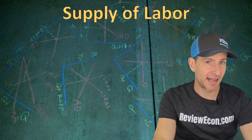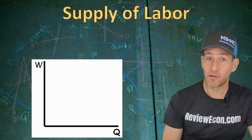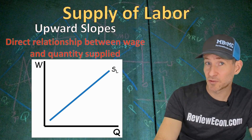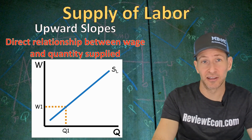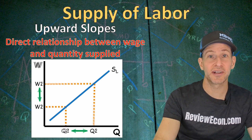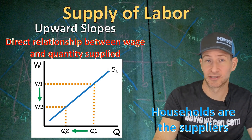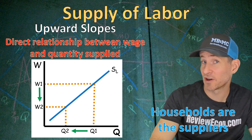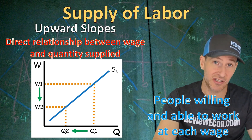Next, let's talk about the supply of labor. The supply of labor still has the wage on the y-axis and quantity on the x-axis. When we graph the supply of labor, it's an upward sloping curve because there's a direct relationship between the wage and the quantity of workers willing and able to work. At low wages, we have a low quantity of workers supplied; when wages rise, more workers are willing to work. Remember, households are the suppliers of labor — meaning average everyday consumers are in that supply curve, which is different from other supply curves. The supply curve is the number of workers willing and able to work at each possible wage.